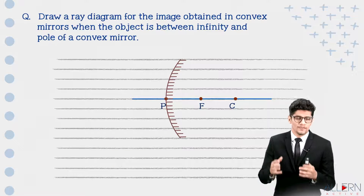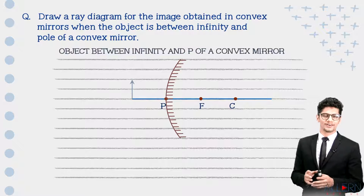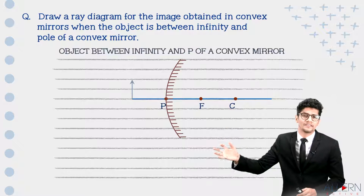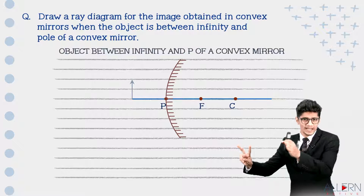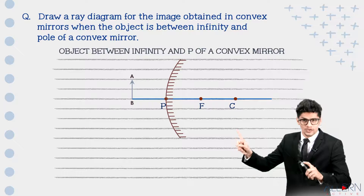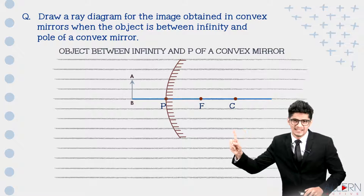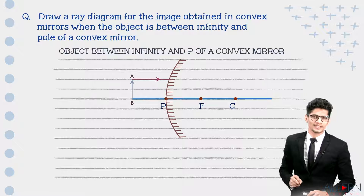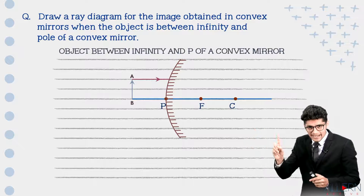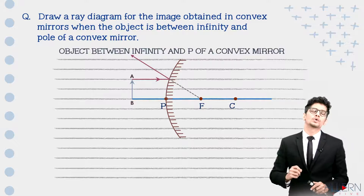We now draw the ray diagram for an object placed between infinity and the pole of a convex mirror. Using the base diagram, place the object two centimeters beside the pole, with a height of two notebook lines. Apply the first rule: draw the incident ray parallel to the principal axis with an arrow. Since this is a diverging mirror, keep your scale at this point and at F, draw the reflected ray away from the mirror and a dotted line toward the focus.